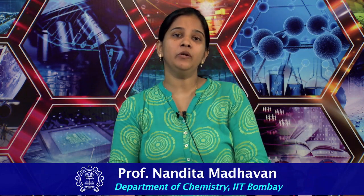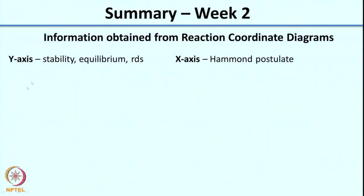In week 2, we looked at reaction coordinate diagrams — how to represent reactions as reaction coordinate diagrams and what they mean. We saw how the y-axis gives us information about the stability of the reactants and intermediates, whether the reaction has a tendency to be in equilibrium, and what the rate-determining step is. We also looked at what information we can get from the x-axis, the reaction coordinate, which corresponds to the geometry of the compound and tells you information about the nature of the transition state.